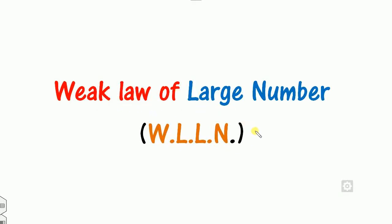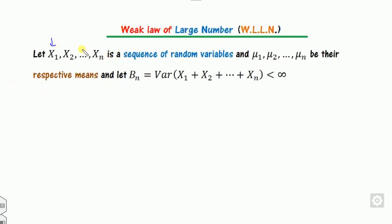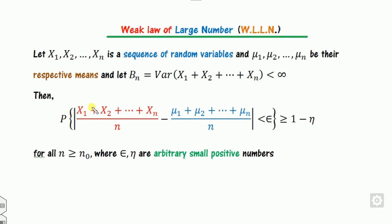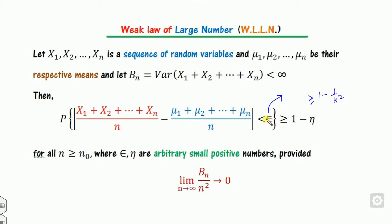Based on this convergence in probability and the Chebyshev theorem, we can state the weak law of large numbers. The statement is: if x_i's are a sequence of random variables with respective means mu_i, and b_n is the variance of their sum and is finite (less than infinity), then the probability that their average converges to the average of their means, provided b_n/n² approaches 0.